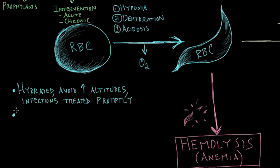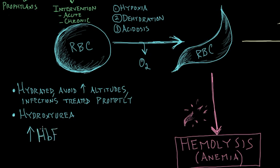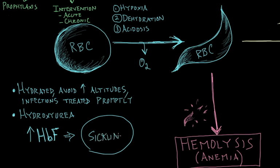Another thing that can be done to prevent sickling is the administration of hydroxyurea. What hydroxyurea does is increase the level of hemoglobin F — the hemoglobin type F discussed in the previous video. This form of hemoglobin, in turn, prevents sickling. So that's another way to prevent the manifestation of the disease.